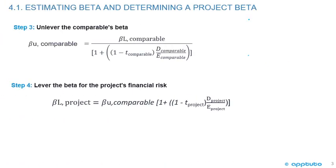For step three, unlevering the comparable's beta: you need the beta of a comparable company or companies, and then you unlever it. Beta unlevered (beta U) equals the beta of the levered company in the numerator, divided by the denominator: one plus bracket one minus the tax rate of the comparable times the debt-to-equity ratio of the comparable company.